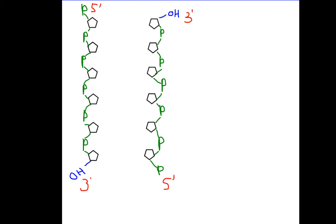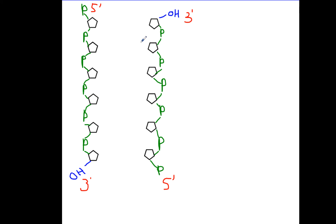We do spend quite a bit of time later in the semester talking about the A's, the T's, the C's, and the G's that are in the middle of the DNA. But for right now, I just want to talk about the backbone of the DNA. When we talk about DNA replication, we say that new pieces of DNA are always made in the 5-prime to 3-prime direction. So that means if I wanted to make a new piece of DNA using this strand as a template, I would have to operate in this direction.